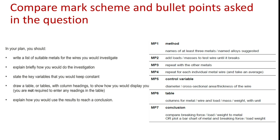The first bullet point is to write a list of suitable metals for the wires you would investigate — one mark for naming at least three metals. The second bullet point is to explain briefly how you would do the investigation — marks two, three, and four cover the method, which contains three marks. The third bullet point is to state the key variables you would keep constant — mark five is for that, the control variable. The fourth bullet point is to draw a table with column headings — mark six, MP6, is one mark for the table.